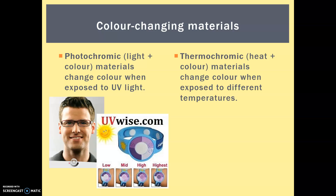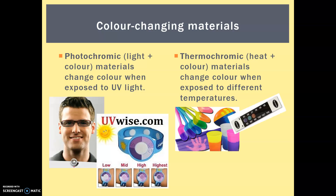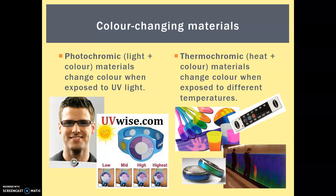In comparison, we have thermochromic materials — thermo meaning heat and chromic again meaning colour. So thermochromic materials change colour when exposed to temperature, either hot or cold, and most often they react to a change in warmth. They are used for things like colour-changing spoons to check the temperature of baby food, so as not to burn a baby's mouth. Most of us have had one of these forehead thermometers put across our forehead. They have functional uses, but also novelty uses such as mood rings or thermochromic urinals to help with aim.